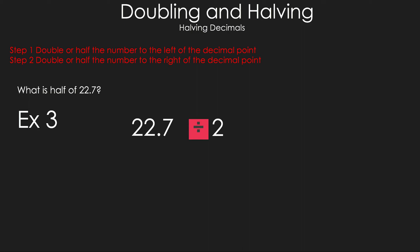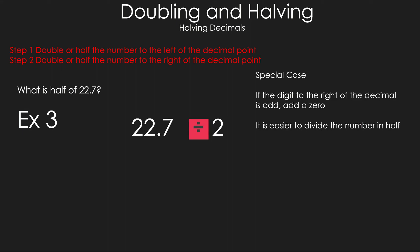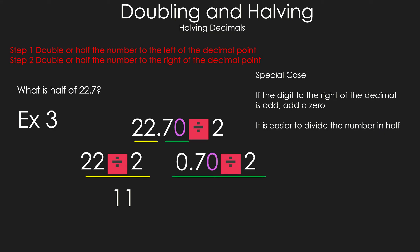Example 3: half of 22.7. This is a special case — the digit to the right of the decimal is odd, so we add a 0 to make it 22.70. This hasn't changed the number, just made it easier to divide by 2. Separate: divide 22 by 2 to get 11, then divide 70 hundredths by 2 to get 35 hundredths. Combine for an answer of 11.35.